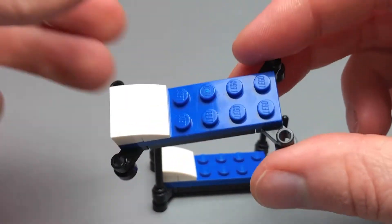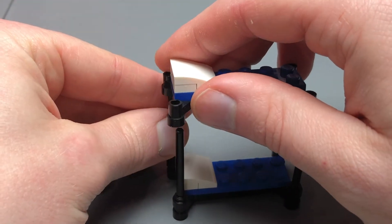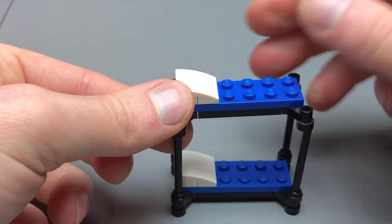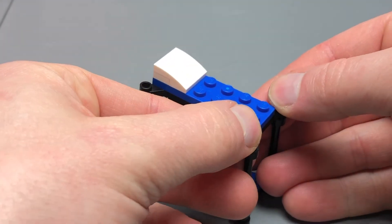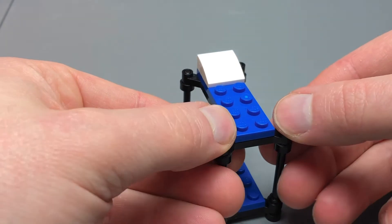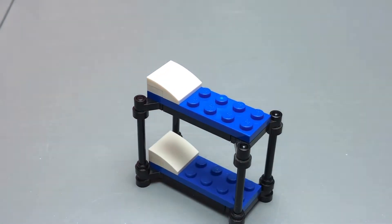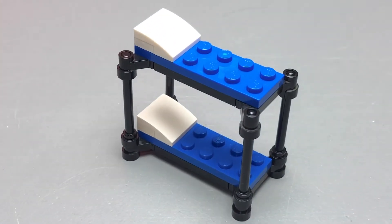Now, we'll take the other piece, and we're just going to place it right on top of those antenna pieces. And there we have it. That is our bunk bed.